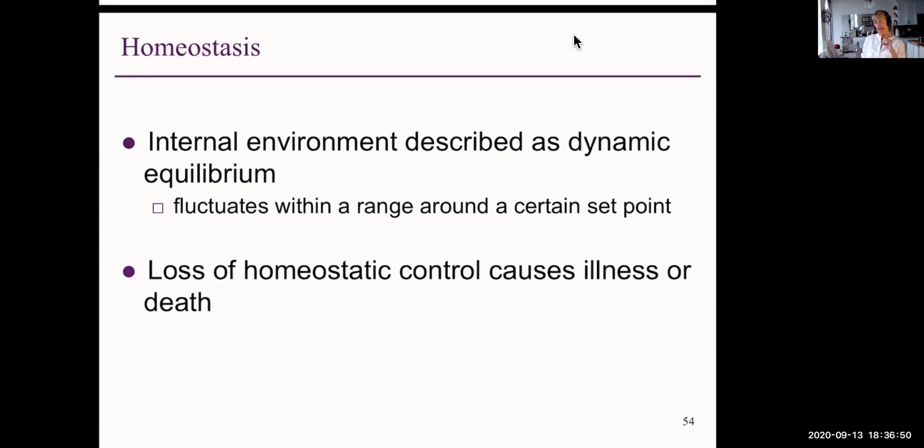Homeostasis is the state of an internal environment which is at what's called a dynamic equilibrium. It's not exactly the same all the time. It can fluctuate within a range around what's known as a set point. Loss of homeostatic control causes illness or death. For example, what is our set point of temperature of the body? 37 degrees Celsius. If we go considerably above that or below, we get either a fever, which can be dangerous, or hypothermia.